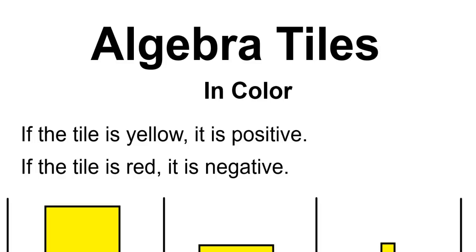Algebra tiles in color. If the tile is yellow, it is positive. If the tile is red, it is negative.